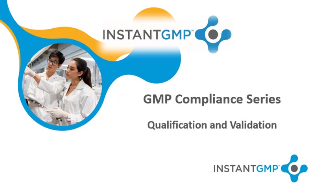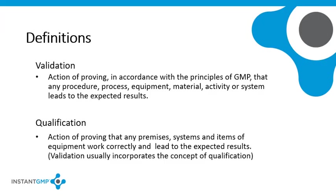There are a number of definitions for validation, all of which say the same thing in different ways. This definition comes from the World Health Organization GMP text. There is a more expanded version in the WHO text on the validation of manufacturing processes, describing the collection and evaluation of data beginning at the process development stage and continuing through the production stage, which ensures that manufacturing processes — including equipment, building, personnel, and materials — are capable of achieving the intended result on a consistent and continuous basis. Validation is the establishment of documented evidence that a system does what it is supposed to do.